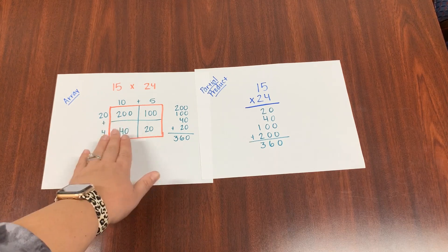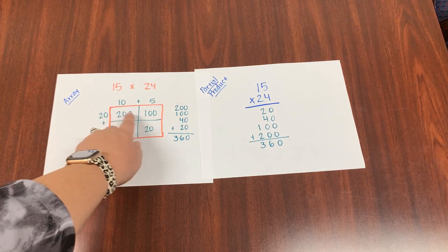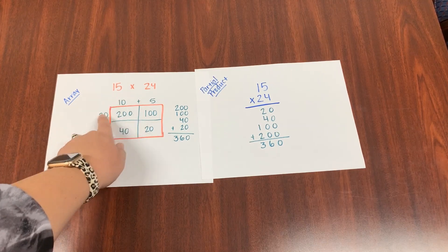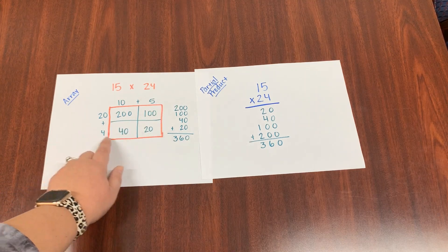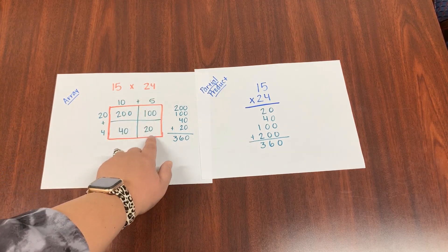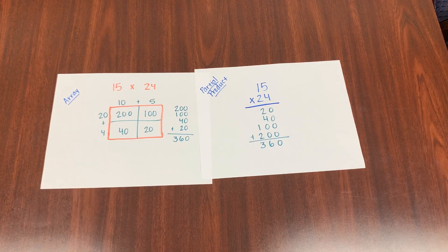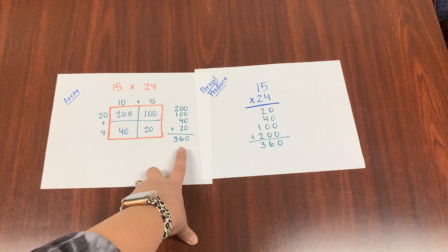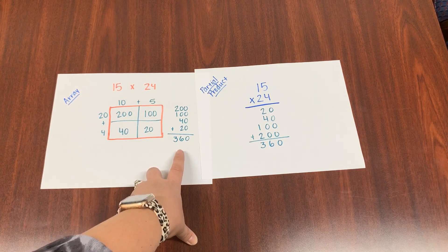Notice we did the same thing with the array. We're multiplying together the columns and rows. 20 times 10 is 200. 20 times 5 is 100. 4 times 10 is 40. 4 times 5 is 20. And then we would add those four numbers together. Making sure that we line up our place values correctly. That's very important. And we would get our final product of 360.